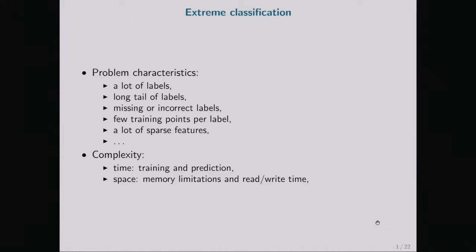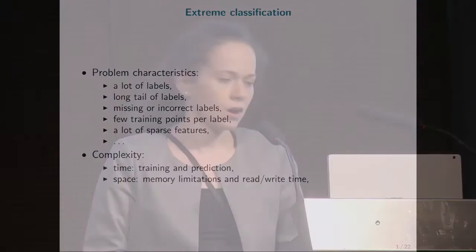In extreme classification, the problems we consider are characterized by a lot of labels, a long tail of labels, missing or incorrect labels, or a lot of sparse features. Therefore, the complexity of extreme classification algorithms is an important issue. In our work, we want to focus on reducing the time and space complexity with respect to the number of labels.